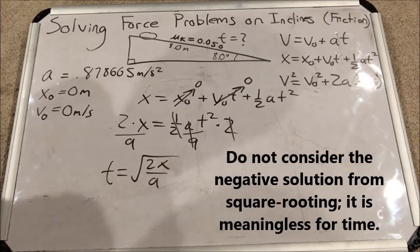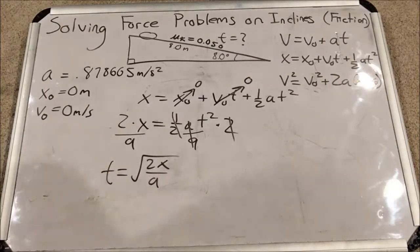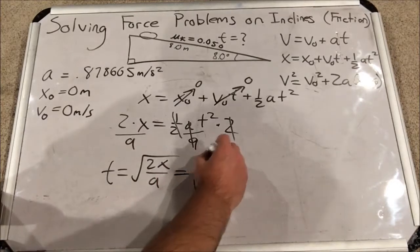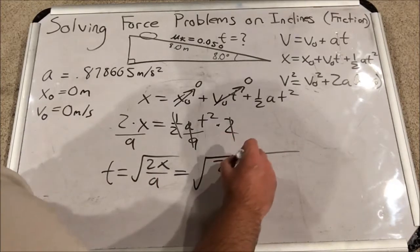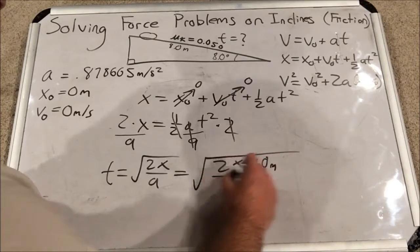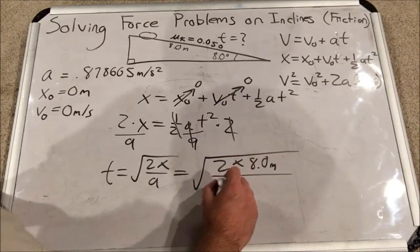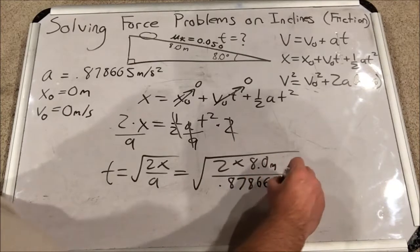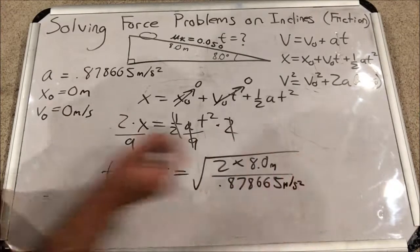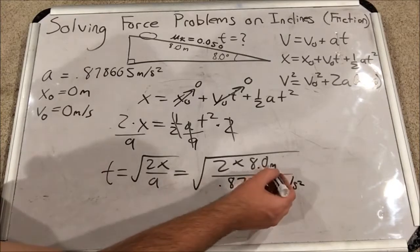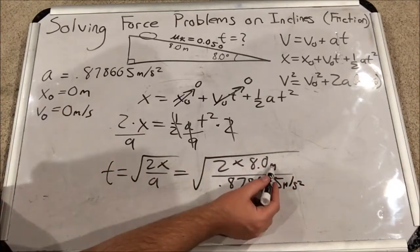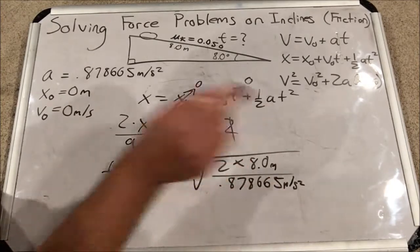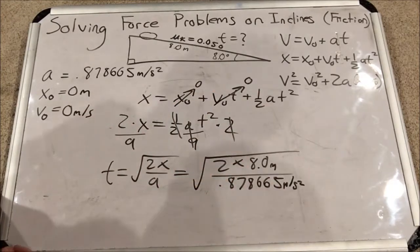So now all I have to do is plug in the final x value, which is 8 meters, and the a, which we derived earlier. So we have 2 times 8.0 meters, and that's all divided by 0.878665 meters per second squared. Always want to check and make sure that my units work out, and the meters cancel, and the second squared are on the bottom of the bottom. So they'd come to the top, square root, then I get seconds. Perfect.